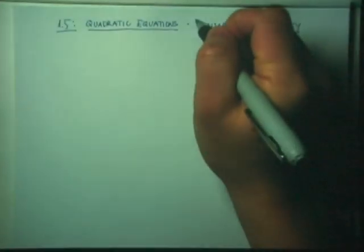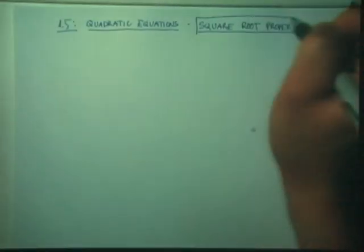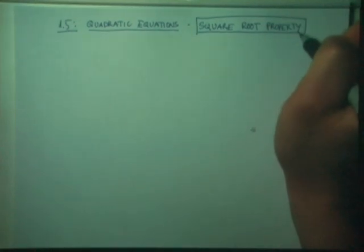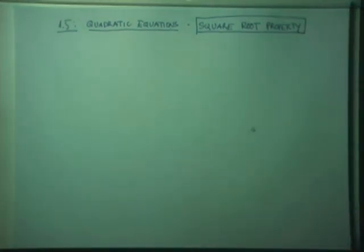Let's take a look at a different method for solving quadratic equations. The method here is called the square root property method. We're going to try to solve many equations using the square root property.